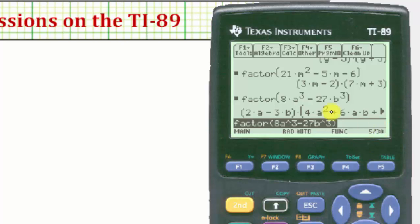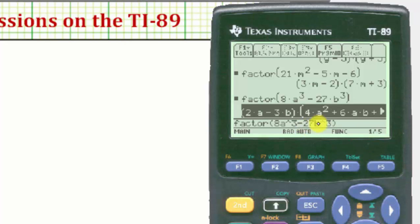Notice the factor form of the expression continues to the right because of this right arrow. So the factor form of the given expression is 2a minus 3b. I'll go ahead and press the up arrow. Times the quantity 4a squared plus 6ab. Pushing the right arrow, we can see the remaining part of the second factor which is plus 9b squared.